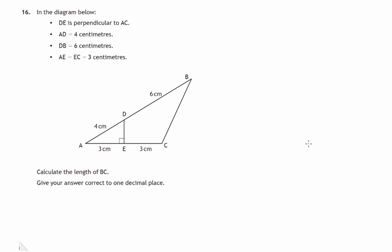So here we have a triangle ABC and there's a perpendicular line being drawn halfway along AC perpendicular to AC, and we're asked to calculate the length of side BC. Give your answer correct to one decimal place.